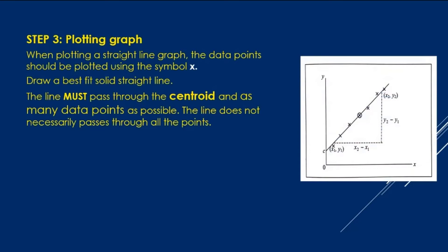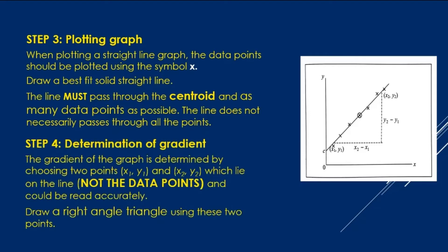Step 3: Now come to the plotting graph. When plotting a straight line graph, the data points should be plotted using the symbol cross. Draw a best fit solid straight line. The line must pass through the centroid and as many data points as possible. The line does not necessarily pass through all the points.